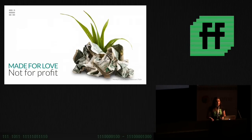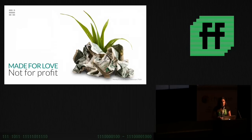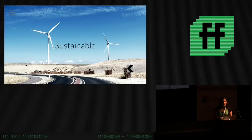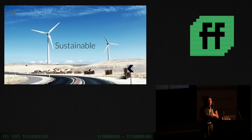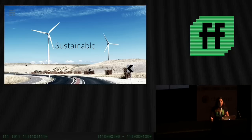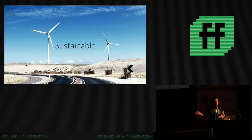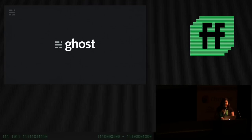We're backed by a non-profit foundation called Ghost Foundation, which means every penny we raise has to be spent on developing the software further. The fifth point: we have a sustainable business model. The Ghost Foundation runs a hosting service called Ghost Pro — you pay a monthly fee and we host your blog. Every penny raised funds development, which makes the software better, attracts new users, more people pay, and the cycle continues. So Ghost is a design-focused, non-profit, open-source, sustainable blogging platform.